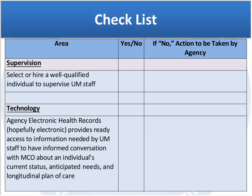Regarding supervision, to have successful utilization management you need an effective individual supervising the UM staff who understands the MCO's expectations and sees it as their business to meet those expectations while also meeting the needs of the agency. In terms of technology, UM staff should have access to an electronic health record where they can pull information on a timely basis, and they should be fully trained on how to access and use that tool effectively.